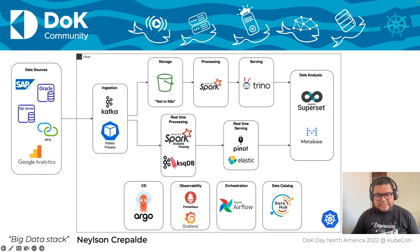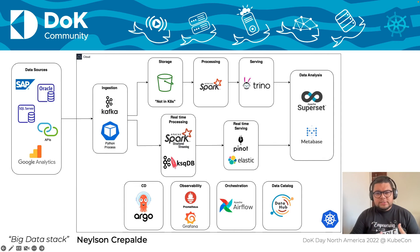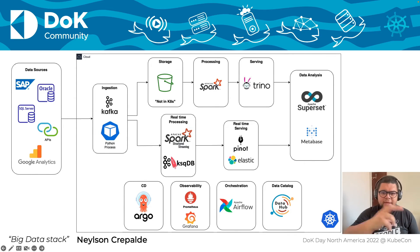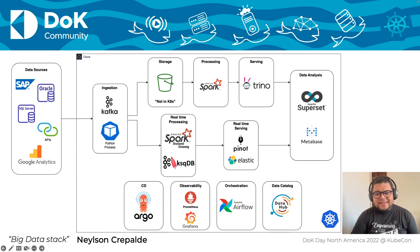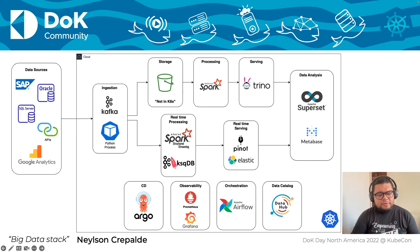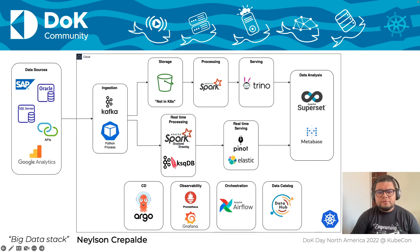For the data platform, we use Argo CD — a great GitOps integration tool for Kubernetes. Argo CD has the capacity to watch our Git repositories, where we put manifest files, Helm charts, and other formats to deploy to Kubernetes. Whenever we have an update, Argo CD detects it and automatically migrates the updates to Kubernetes. For observability, we rely on Prometheus and Grafana. For orchestration, we use Apache Airflow. And for data catalog, we use Data Hub, which was developed at LinkedIn and has a great interface and features.